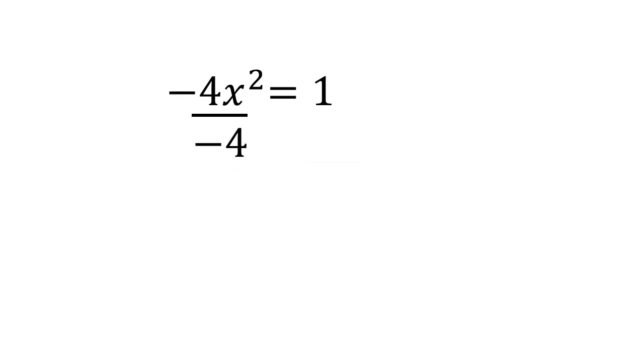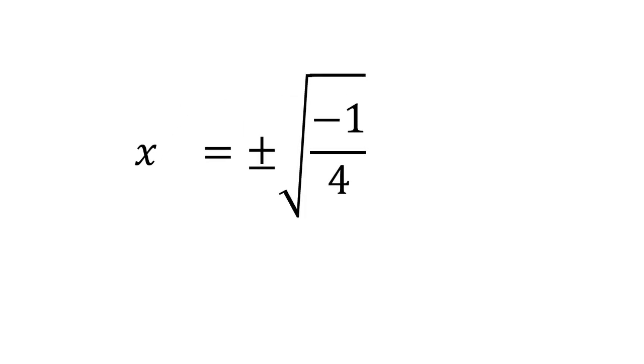On dividing both sides by negative 4, we get x² equal to -1/4. Taking the square root, we get x equals plus minus square root of -1/4.